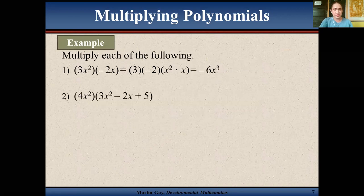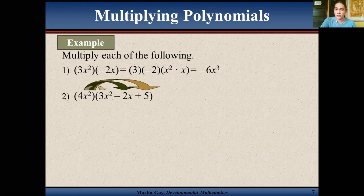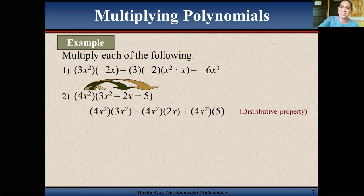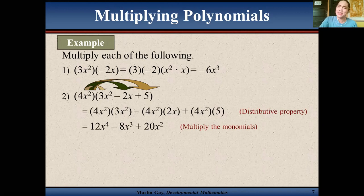Another example — here the terms are not monomials, so we use the distributive property of multiplication. Distribute 4x² to 3x² minus 2x plus 5. So we have 4x² times 3x², minus 4x² times 2x, and 4x² times 5. That gives you 12x⁴ minus 8x³ plus 20x².